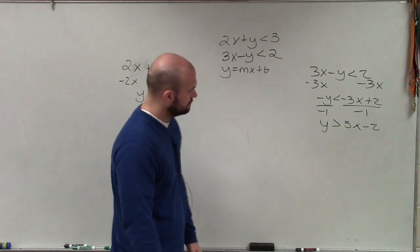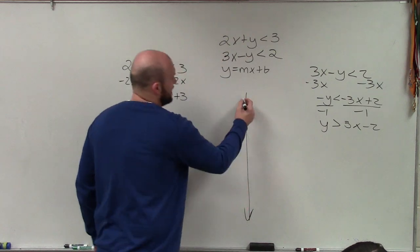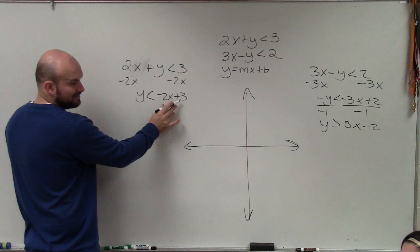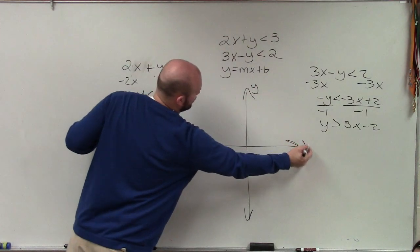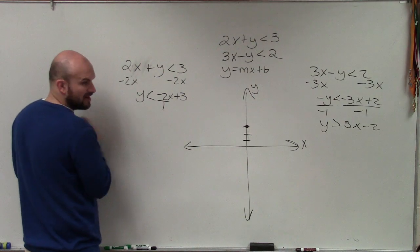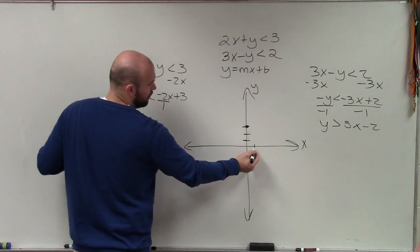You divide it because you don't want y to be negative. You got to solve for y as positive. Now, we just identify our slope and our y-intercept. Here, my y-intercept is 3. So on the y-axis, I go up to 3. 1, 2, 3. My slope is negative 2. We always want to write our slope as a fraction.